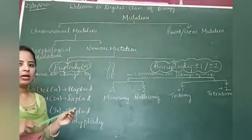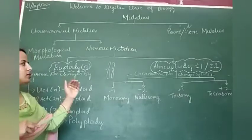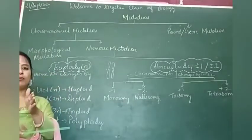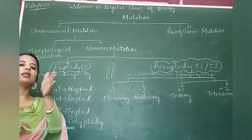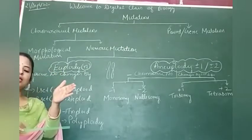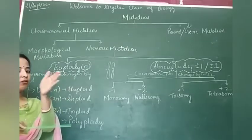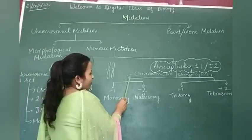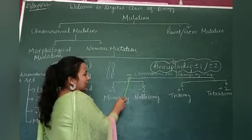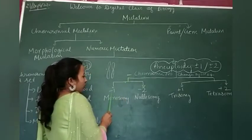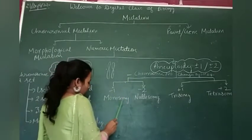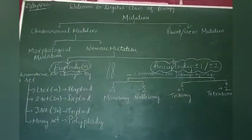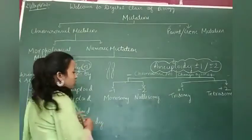Next, it is aneuploidy. What happens in this? In this, the chromosome number changes by one or two. Either one is deleted or two are deleted, or one is added or two are added. On that basis, if the chromosome number is deleted - if only one chromosome is deleted, it is known as monosomy. If two chromosomes are deleted, then it is known as nullisomy.